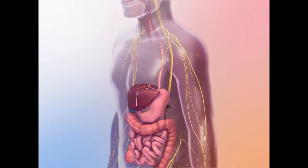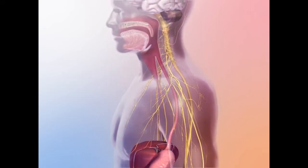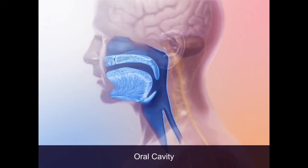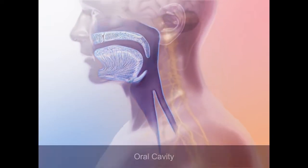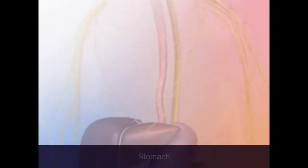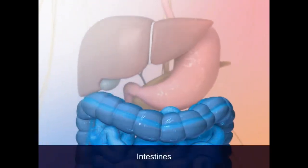The alimentary canal is a single, continuous tube that includes the oral cavity, esophagus, stomach, and intestines.